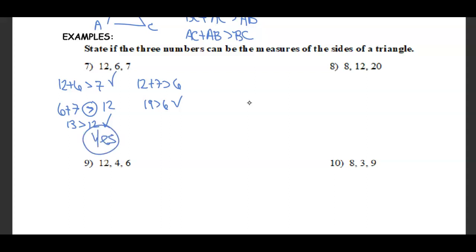When we look at 8, 12, and 20: 8 plus 12 equals 20, which equals the third side. So these sides cannot form a triangle, because the sum equals the third side rather than being greater than it.